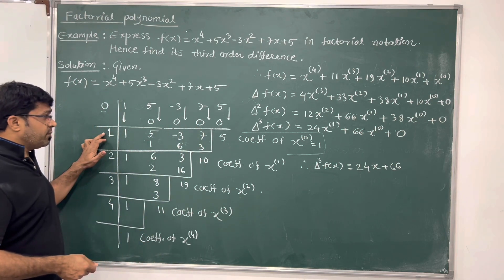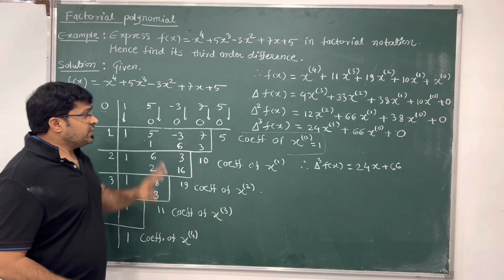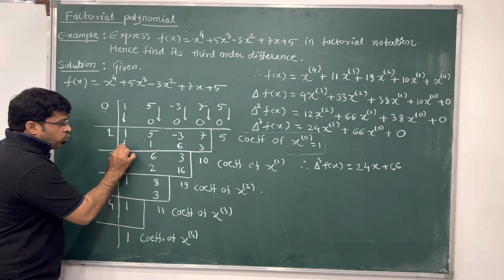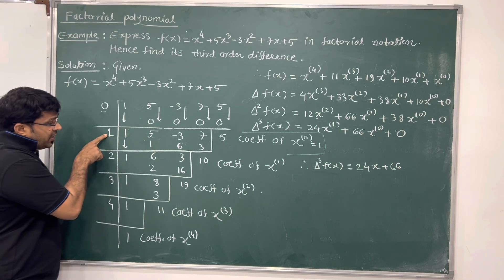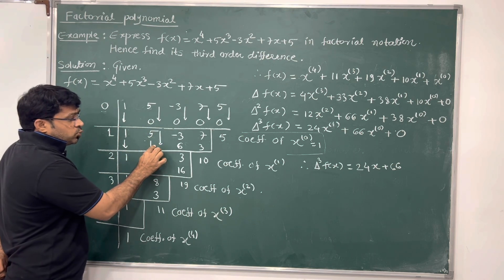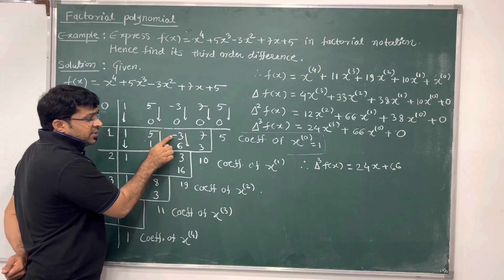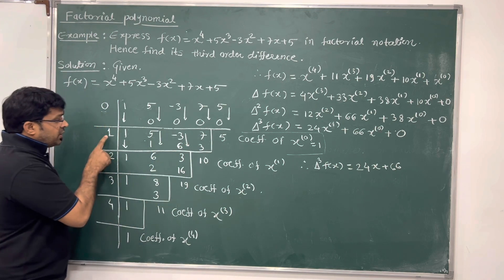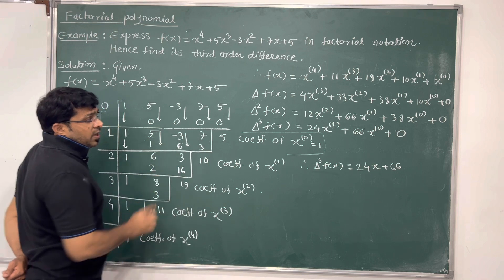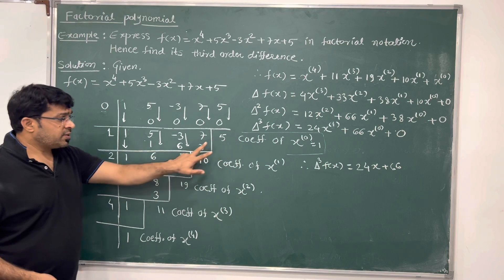Now we start dividing by 1, excluding the last digit 5. We write 1 down. Multiply 1 into 1 gives 1. Addition of 5 plus 1 gives 6. Multiply 1 into 6 gives 6. Addition of minus 3 plus 6 gives 3. Multiply 1 into 3 gives 3. Addition of 7 plus 3 gives 10. We then exclude this 10. So dividing by 0 excluded 5, dividing by 1 excluded 10.